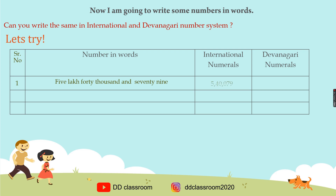The answer is 5, 4, 0, 0, 0, 7, 9 — that is 540079. You may also try the same in Devanagri script. Is it the same? What I have on screen is 540079.